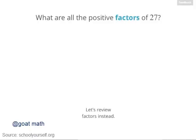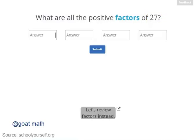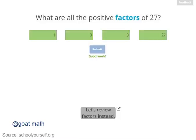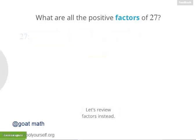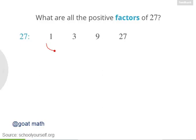To get started, go ahead and list all the positive factors of 27. Can you find all four of them? Exactly right, the factors of 27 are 1, 3, 9, and 27.